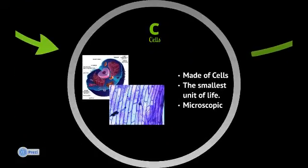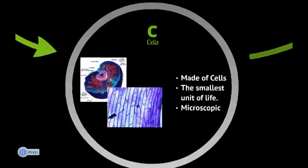Next is cells. All living things are made of cells. Bacteria are little single-celled organisms, all the way up to the largest blue whale that's made of trillions of cells. Everything is made of cells, and they're the smallest unit of life. We're actually going to be looking at a lot of cells underneath microscopes so you get a chance to learn about them and see what they look like.